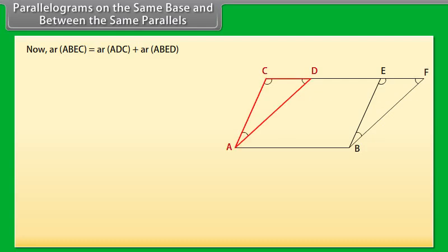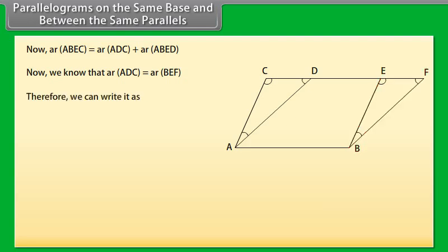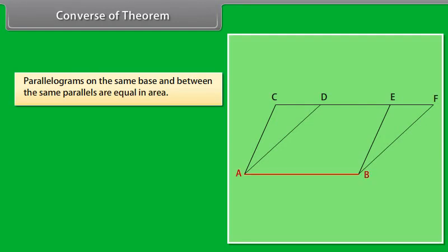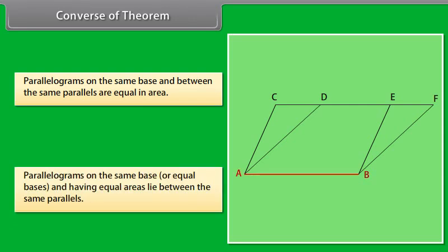Therefore, area of triangle ADC equals area of triangle BEF because congruent figures have equal areas — mark it as 5. Now, area of ABEC equals area of ADC plus area of ABED. Since area of ADC equals area of BEF, we can write area of ABEC equals area of BEF plus area of ABED, which equals area of ABFD. So parallelograms ABEC and ABFD are equal in area.